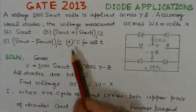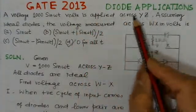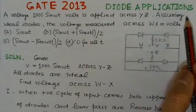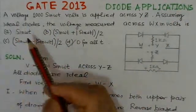Now first problem is of GATE 2013, this problem on diode applications, we will read out the problem here.